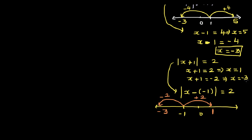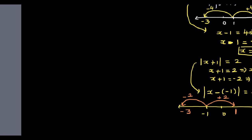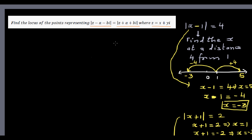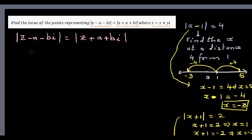In complex numbers the idea is the same — nothing different. So we need to write this: |z - a - bi| = |z + a + bi|. We can rewrite the right-hand side as |z - (-a - bi)|, since to get a minus form I put minus a minus bi.